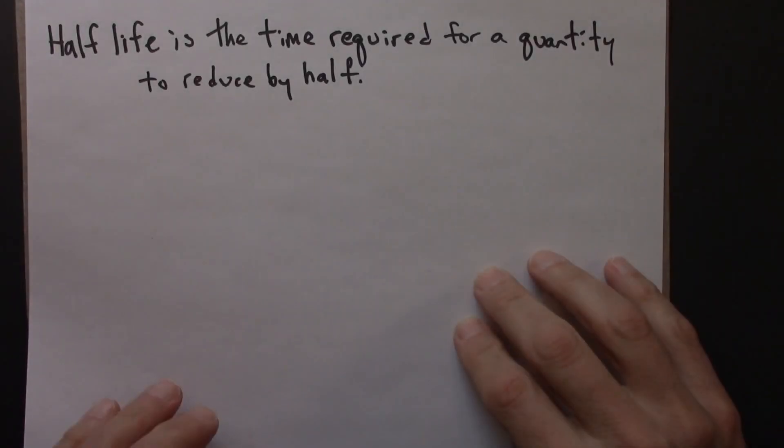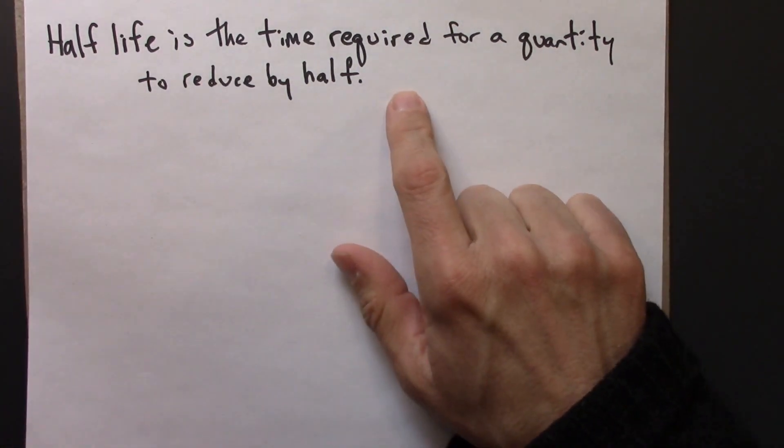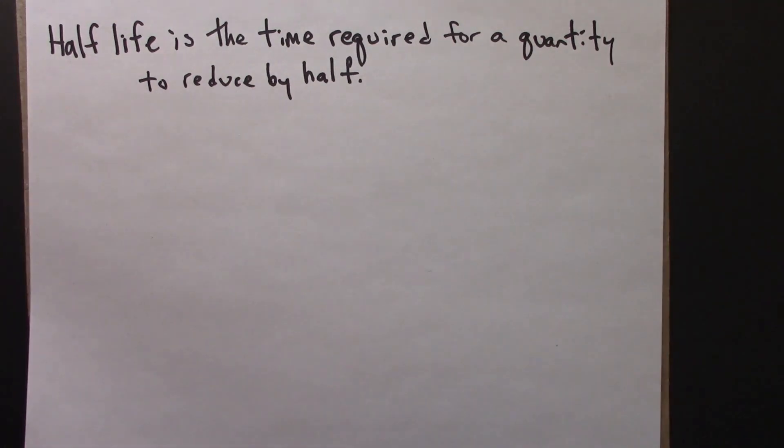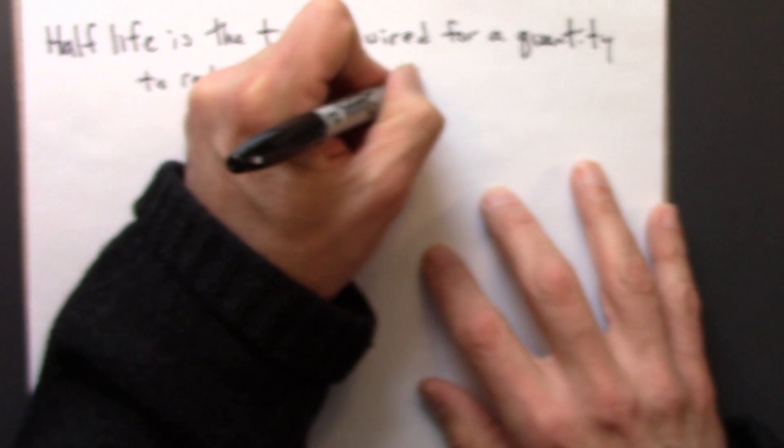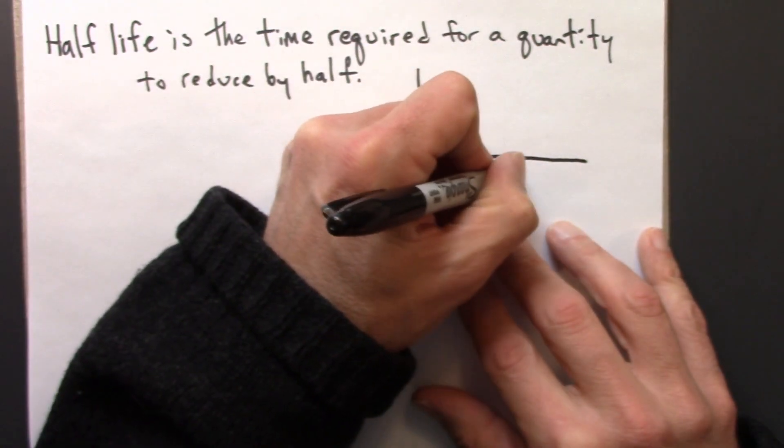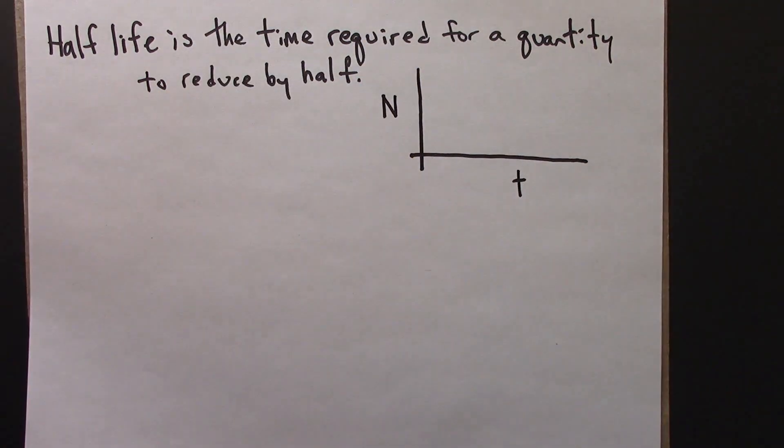But before we do that, I want to say a little bit more about half-lives. So the half-life is defined to be the time required for a quantity to reduce by half. And the context that this comes up is exponential decay.